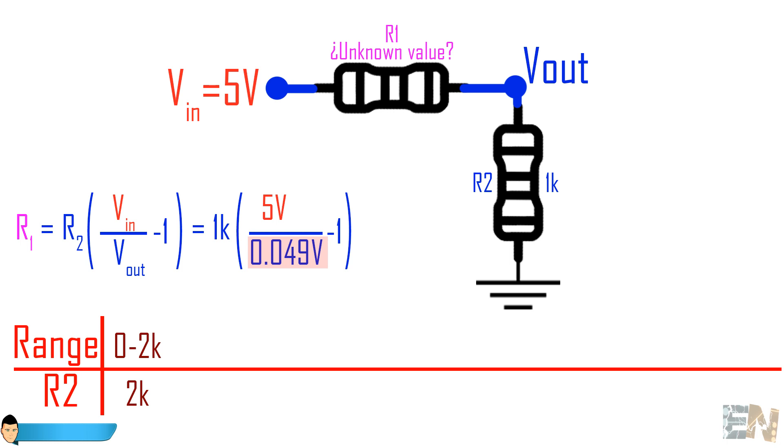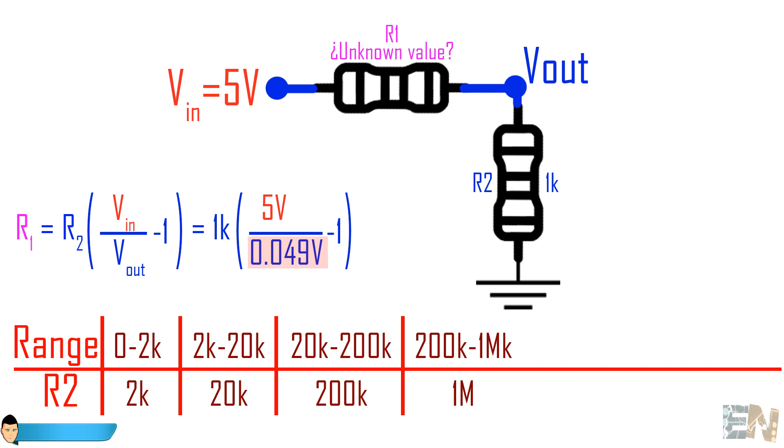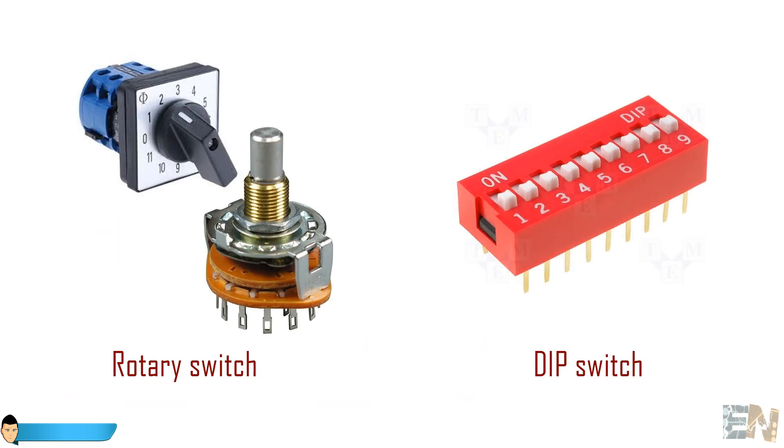That's why I will use 4 different fixed resistors for 4 different ranges. I will use a 2k ohm resistor to measure resistors from 0 to 2k ohms, a 20k ohm resistor for a range between 2k and 20k ohms, a 200k ohm resistor for a range between 20k and 200k ohms, and finally a 1 megaohm resistor for values between 200k and 1 megaohm.